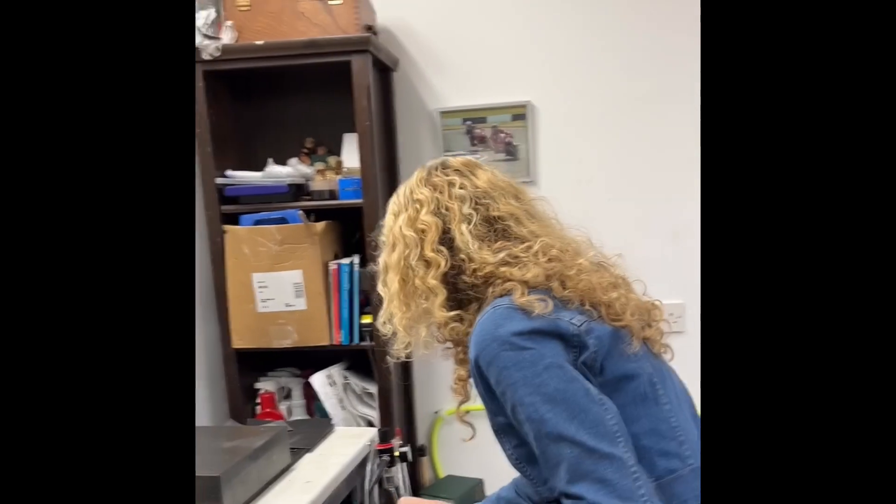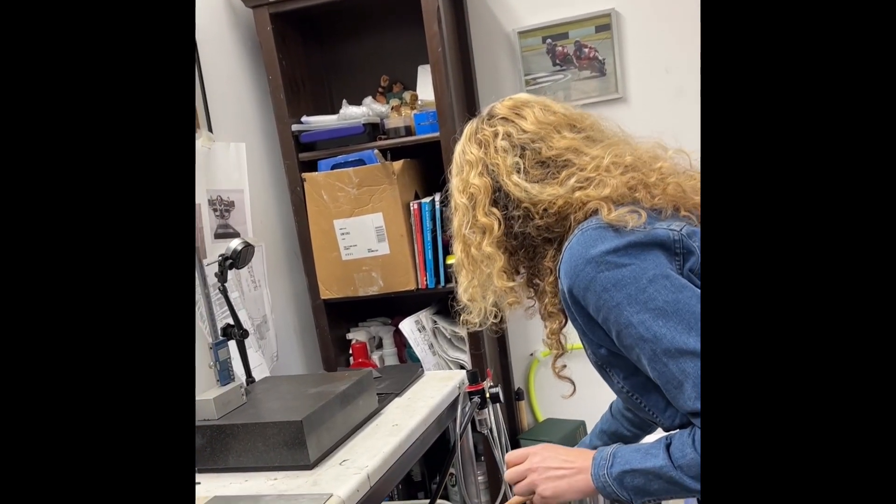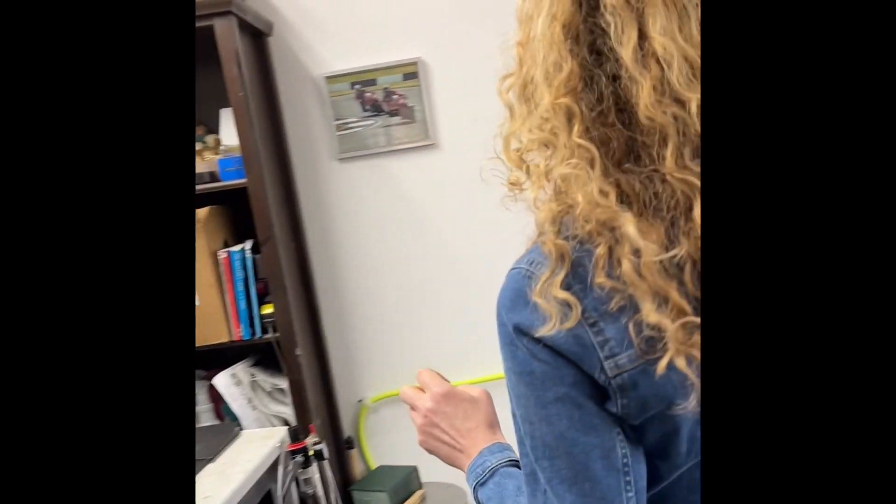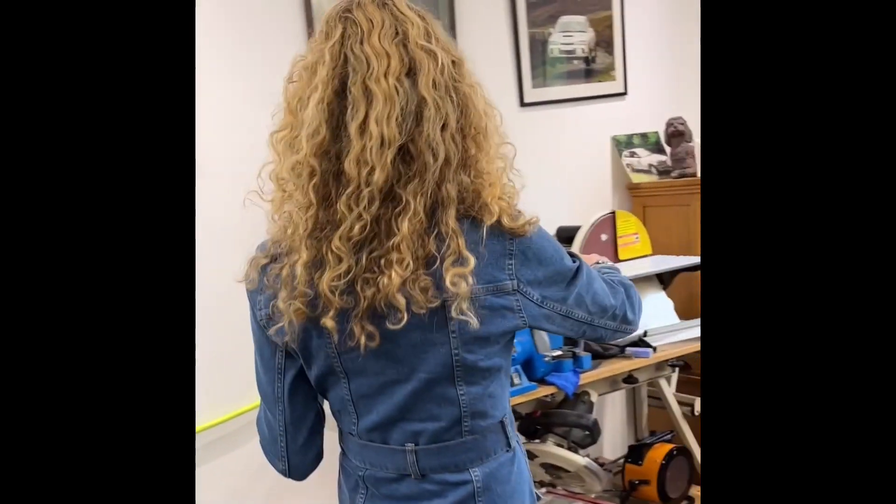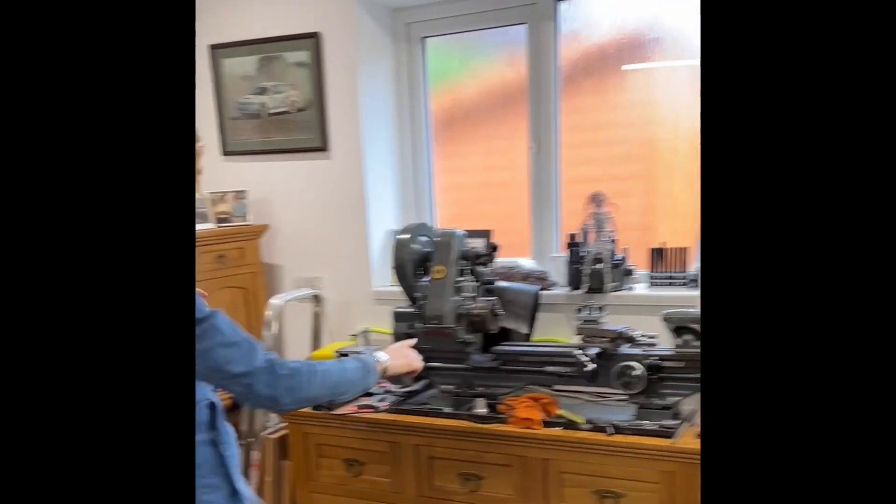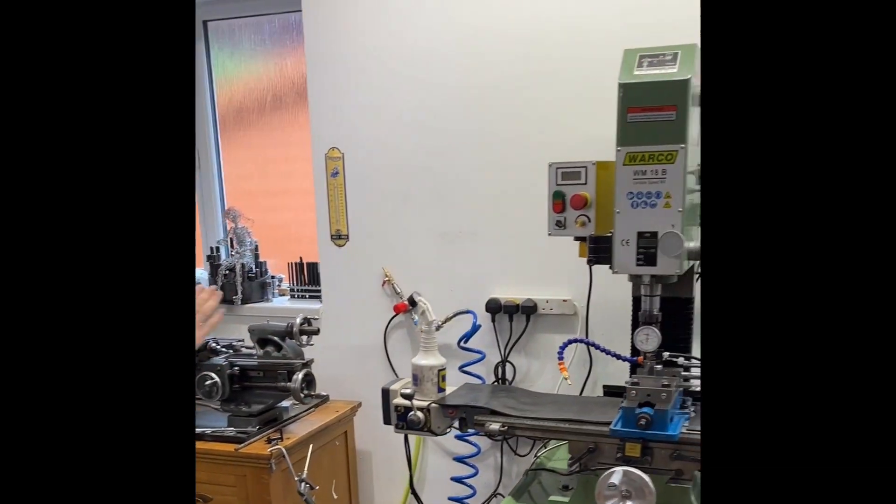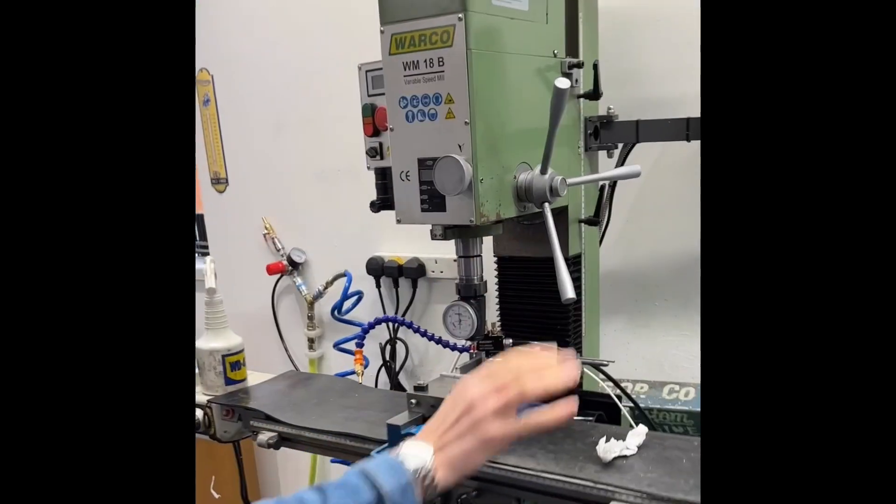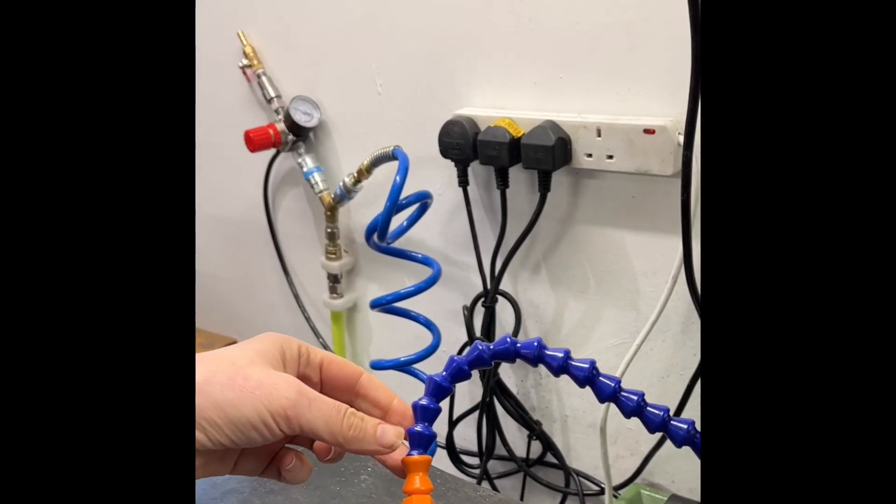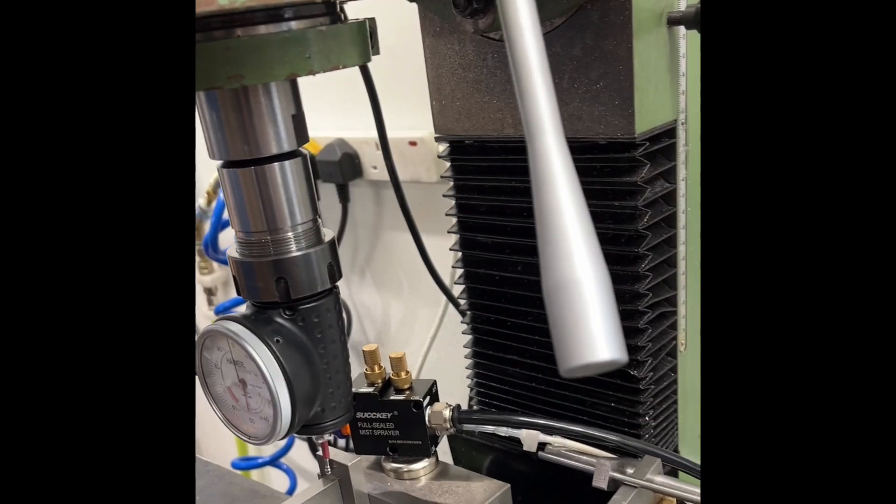Over here we've got our new airline that runs with Dayglo tubing. I can't say it's my favourite colour, but hey-ho. And that goes round to our mill and the lathe. So this is our cool mister. It's already been used. I'm very happy with that.